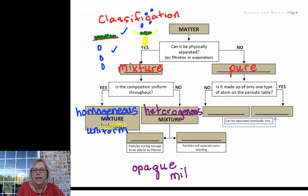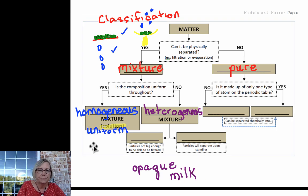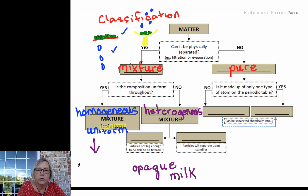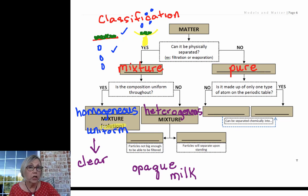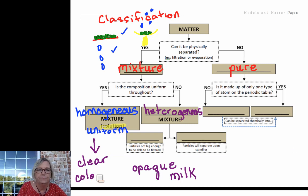An example of an opaque mixture is milk. Homogeneous mixtures or solutions in contrast would be clear. They may have a color—they may be clear blue or clear green or clear and colorless—but clear and opaque are about the degree of transparency.